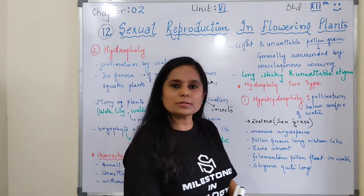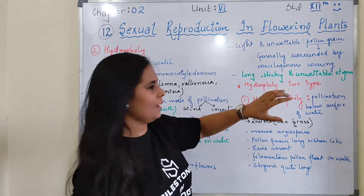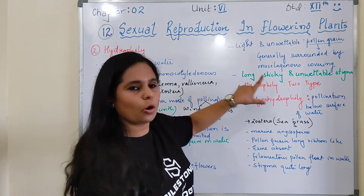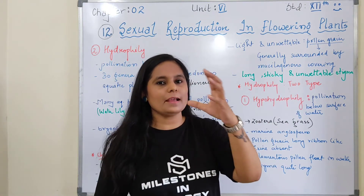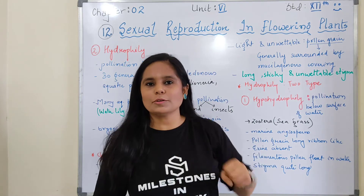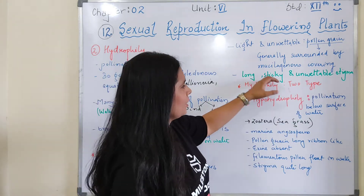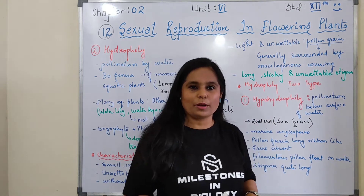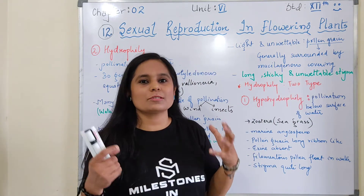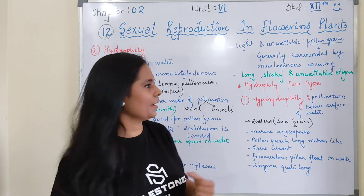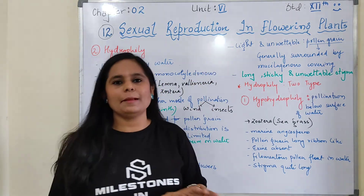The pollen grain has a mucilaginous covering so it stays dry. The stigma should be long and sticky - long so it can trap pollen grains moving through water, and sticky so it can hold them. However, while being sticky, the stigma should also be unwettable, because if it gets wet, its stickiness will be reduced.